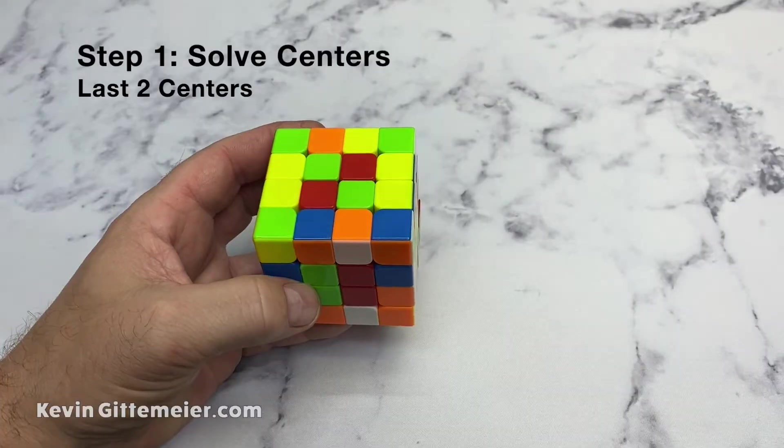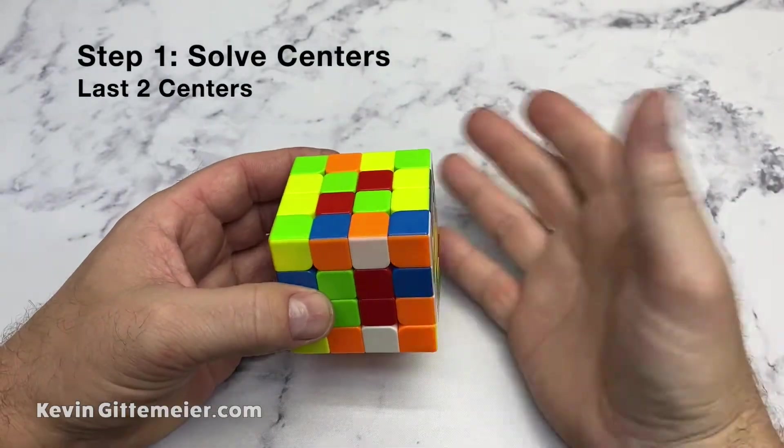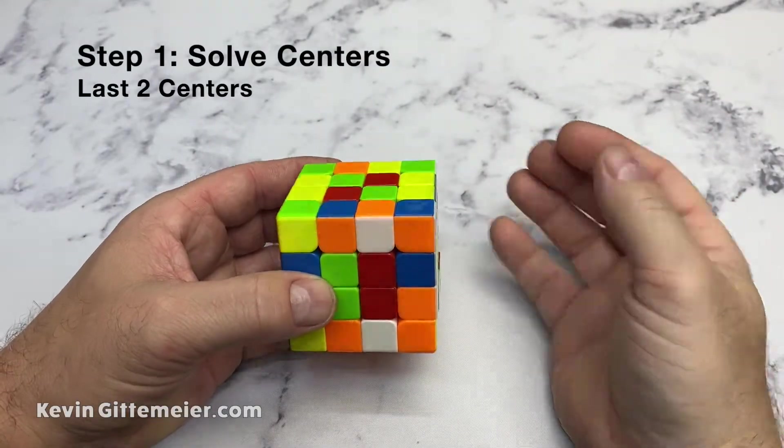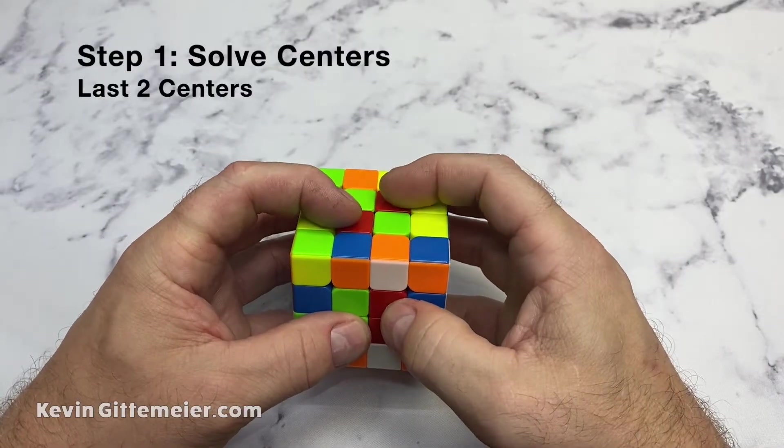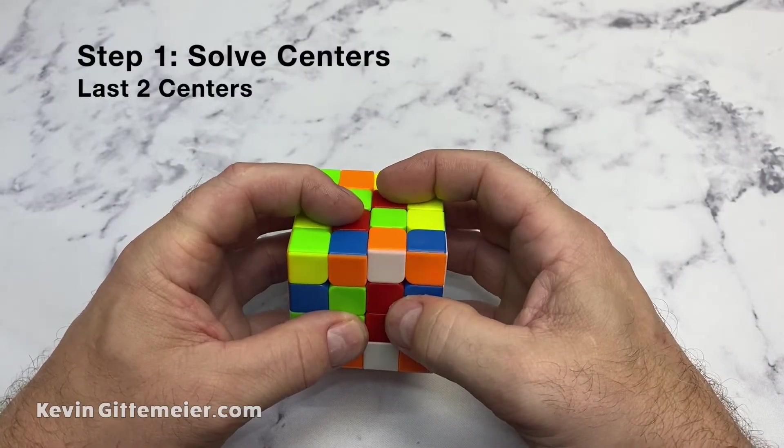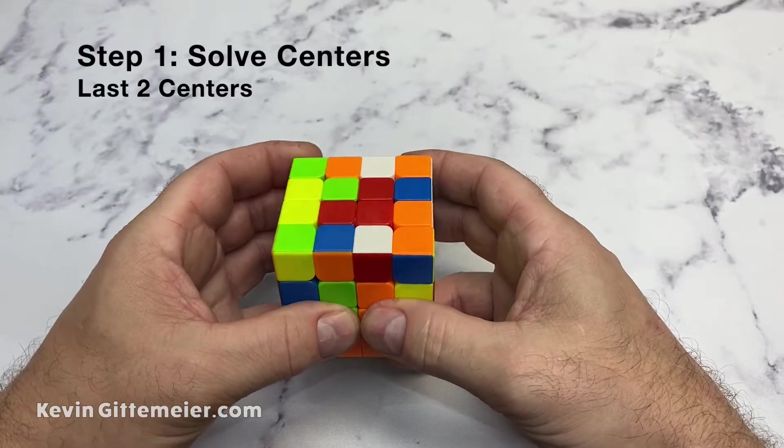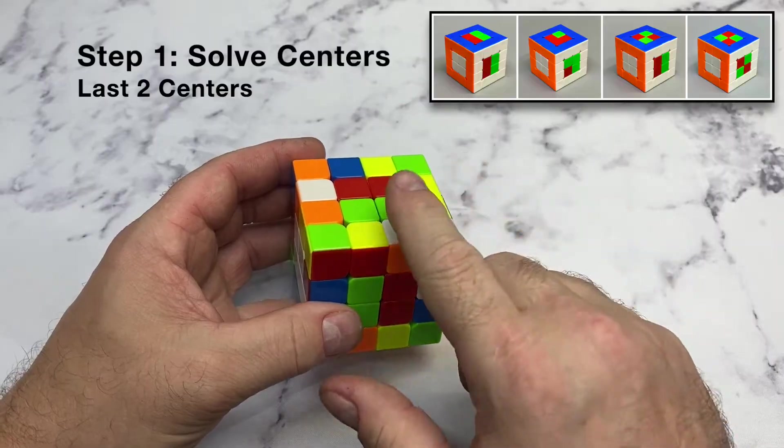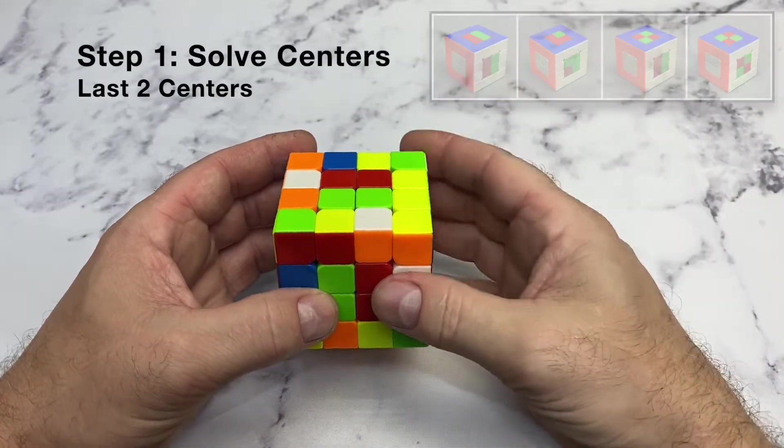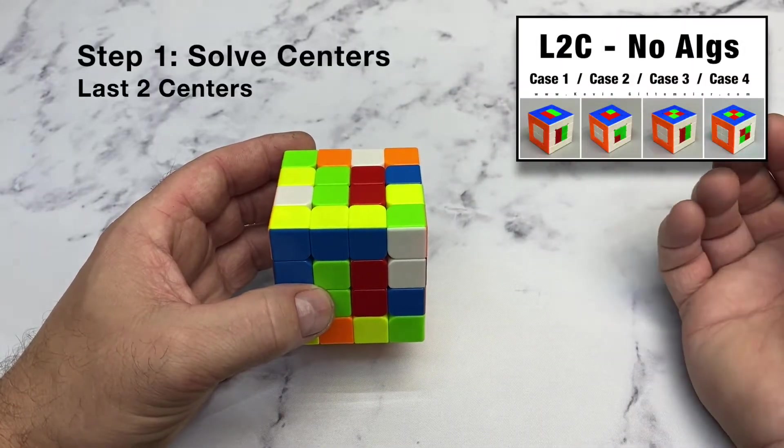And now we're down to our last two centers, which solve simultaneously. Again, we just want to form bars. So I've already got bars here. So I want to notice these and see what I can do to form a bar here. And if I do that, I just form bars. There's five possible cases. We go over that in the tutorial, but they all solve the same principle of forming bars.